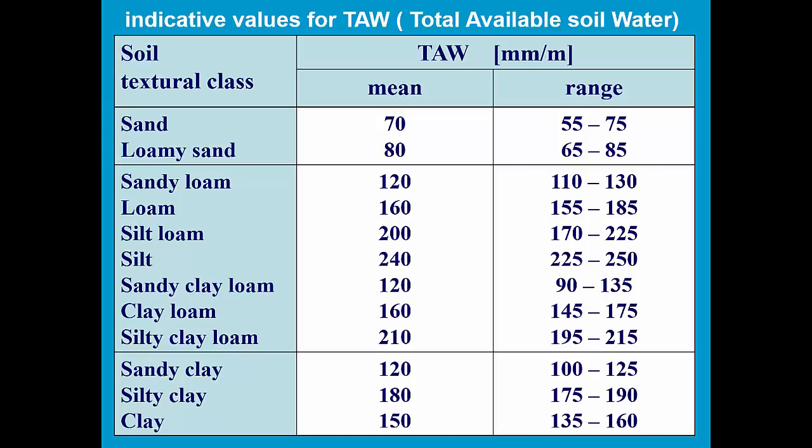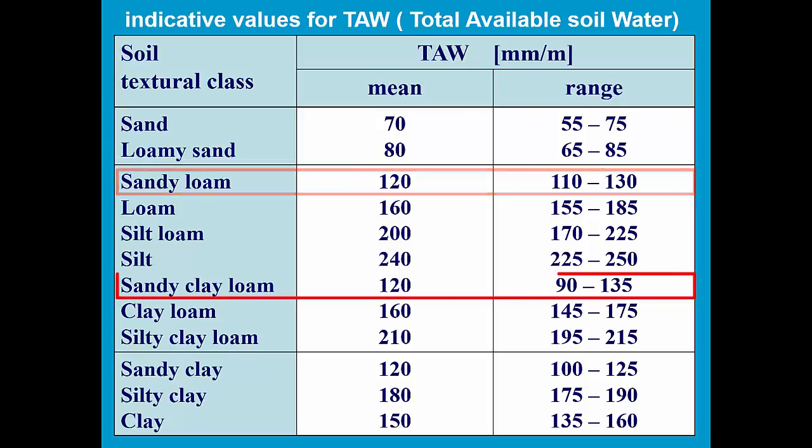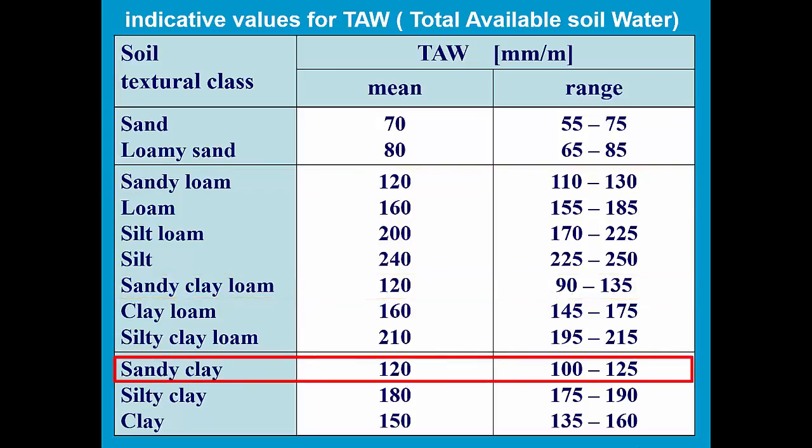So, in our example, we took a soil with a TAW of 120 mm per meter, which is a good indicative value for soil types such as sandy loam, sandy clay loam and sandy clay.